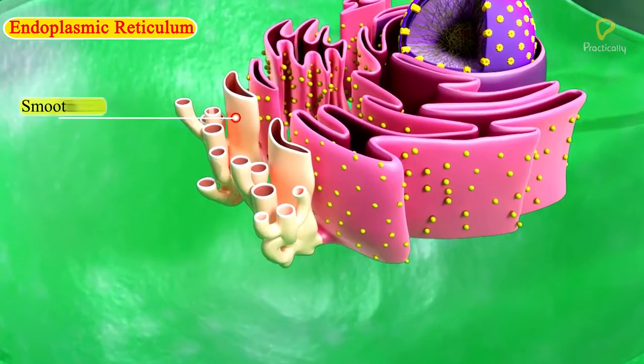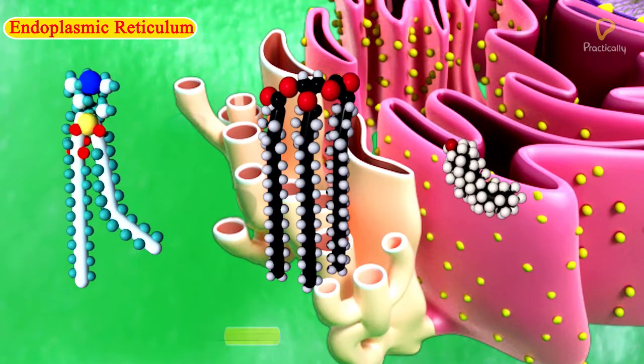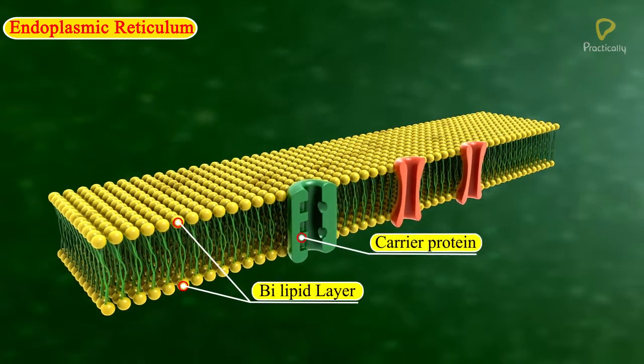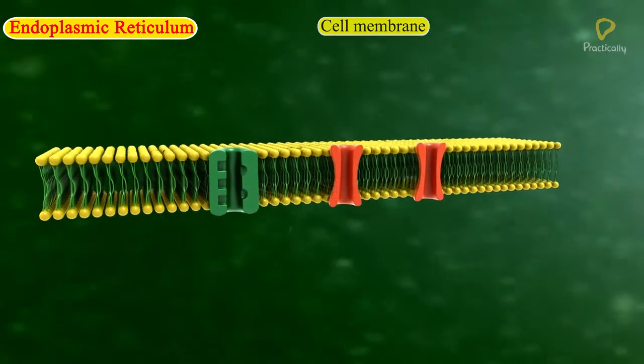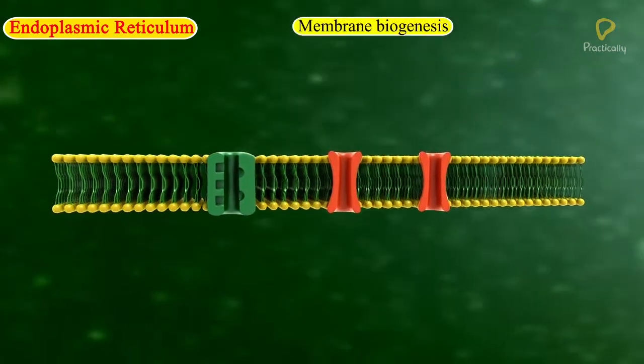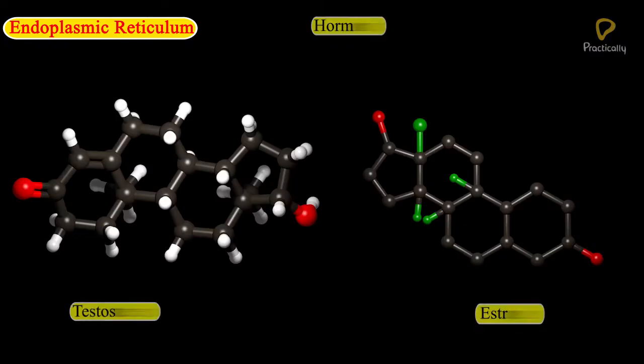The smooth endoplasmic reticulum helps in the manufacture of fat molecules or lipids important for cell function. Some of these proteins and lipids help in building the cell membrane. This process is known as membrane biogenesis. Some other proteins and lipids function as enzymes and hormones.